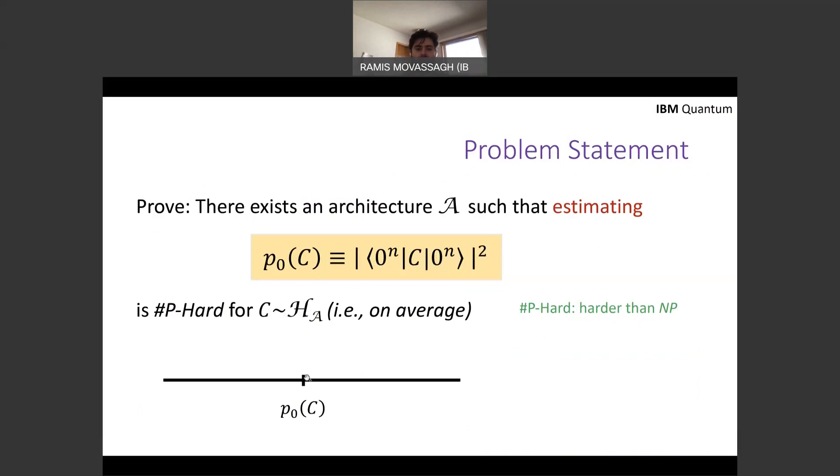And as a matter of fact, estimating is the key word. And one other thing I'd like to say is that because of the so-called hiding property, it's sufficient to prove the hardness of measuring the all zero string.